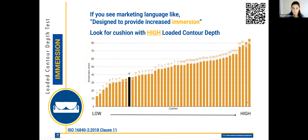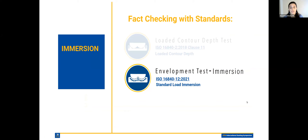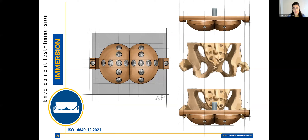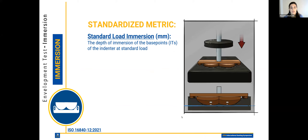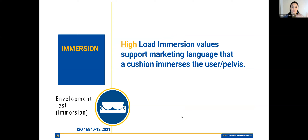The other test that measures immersion is the envelopment test. This test uses a bulbous indenter — similar to the other, except it has semispheric, round, bulbous pieces on the bottom. You still have the ITs at the very tips of those bulbous indenter pieces and trochanter buttons, but it's a more three-dimensional shape versus a single column. We load it into the cushion, wait two minutes, and see how much it immerses. We measure the standard load immersion — the depth of immersion of the base points of that indenter at a standard load. Higher load immersion values support language that a cushion immerses the user or pelvis.